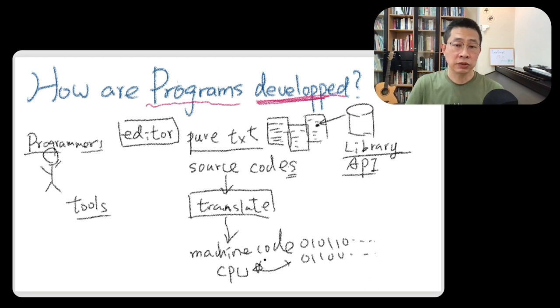And this kind of translator depends on the different level, the level of the language we use. There are two types. One we call the interpreter. Another we call the compiler. To do this job, to translate it. So here is the way how programs develop.